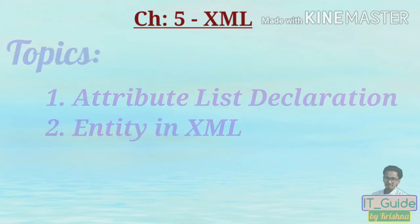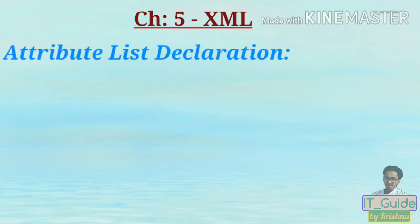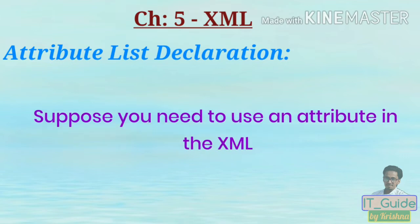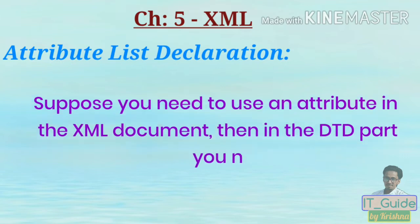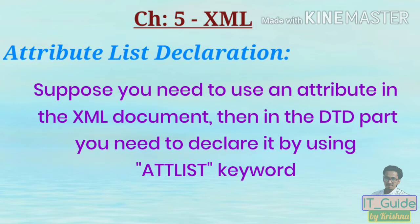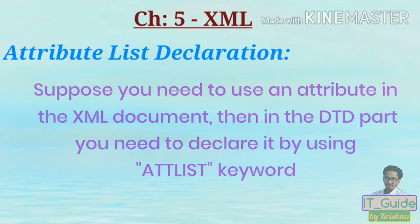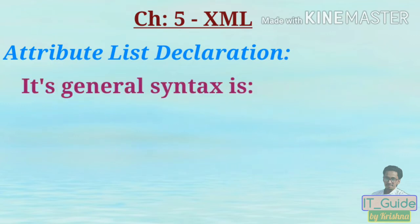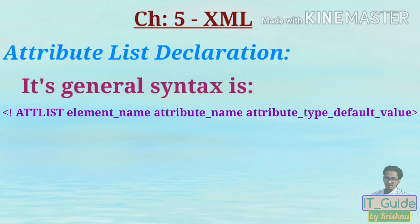Suppose you need to use an attribute in the XML document, then in the DTD part you need to declare it by using the ATTLIST keyword. Its general syntax is: first you need to specify the keyword ATTLIST, then you need to specify the element name, then the attribute name.